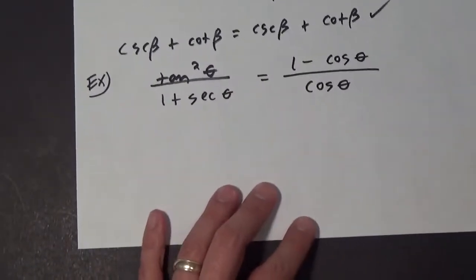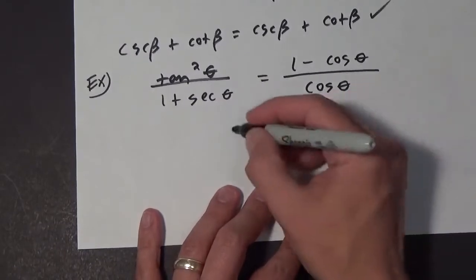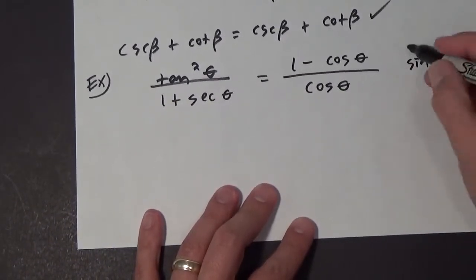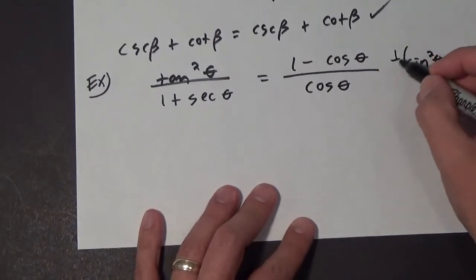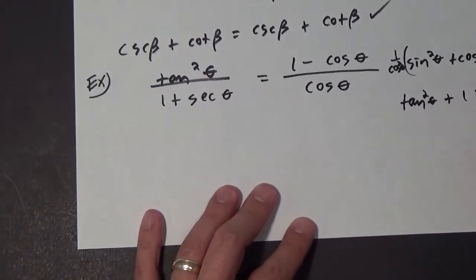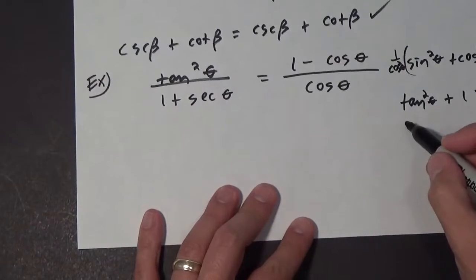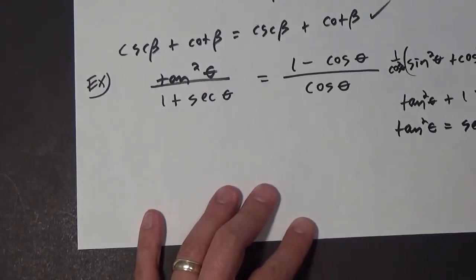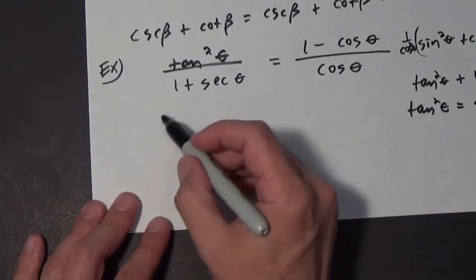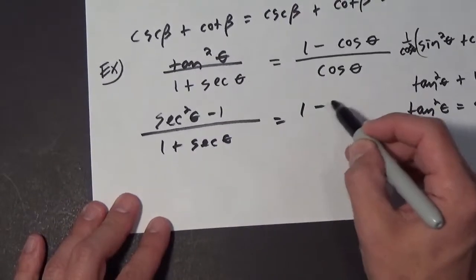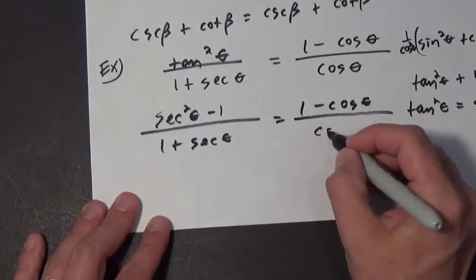We know that sine squared of theta plus cosine squared of theta equals 1. If I multiply everything by 1 over cosine, we're going to get the tangent squared of theta plus 1 equals the secant squared of theta — so tangent squared of theta equals secant squared of theta minus 1. So we're going to have secant squared of theta minus 1 all over 1 plus the secant of theta equals 1 minus the cosine of theta all over the cosine of theta.